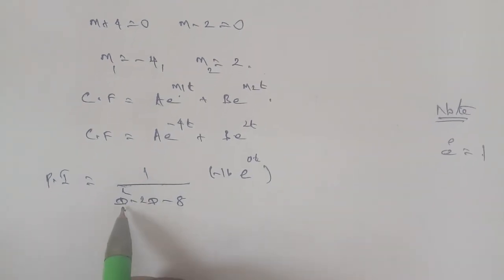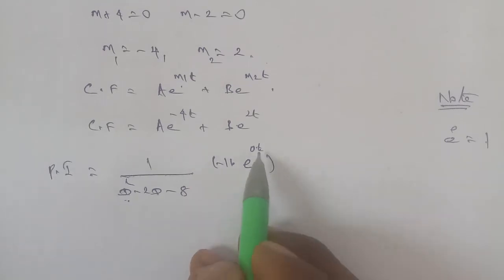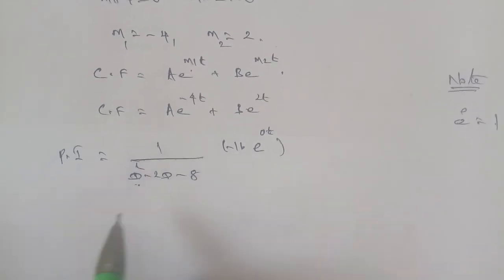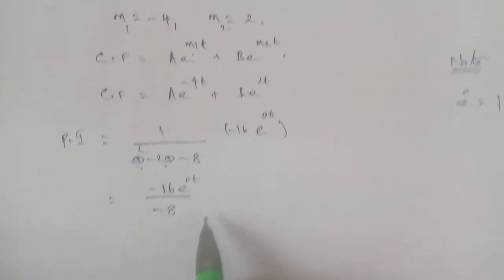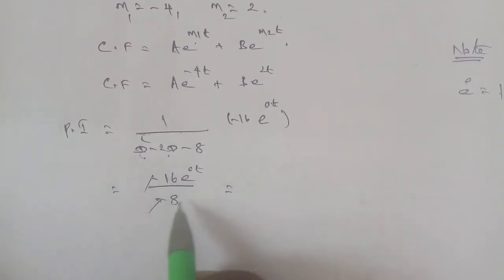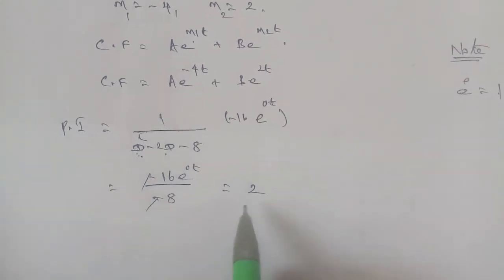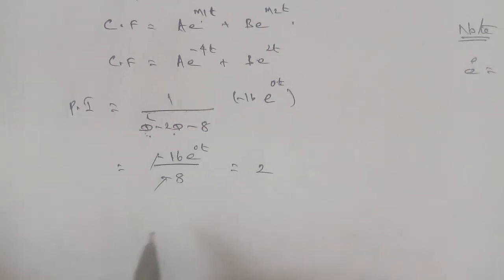Evaluating: 1 over (0² + 2×0 - 8) times minus 16 times e^(0t). This gives 1 over minus 8 times minus 16. The negatives cancel, 16/8 equals 2. Since e^0 equals 1, the particular integral is 2.